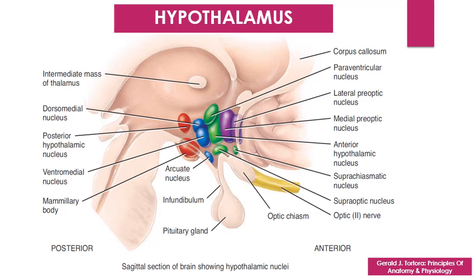The second important structure of the diencephalon is the hypothalamus. The hypothalamus is a small part of the diencephalon located inferior to the thalamus. It is composed of a dozen or so nuclei in four major regions.